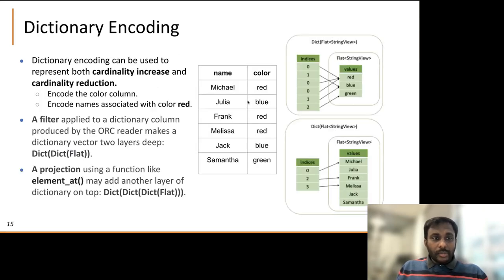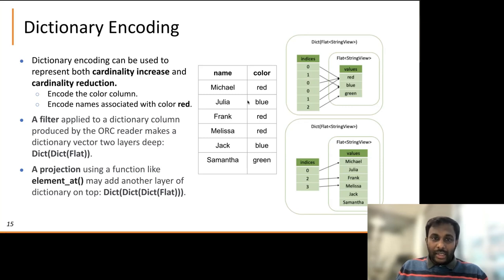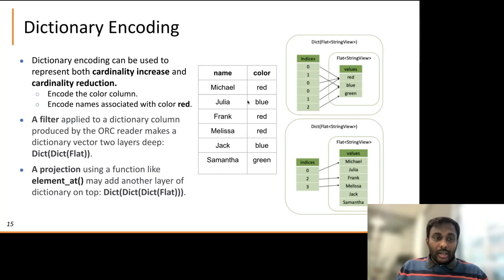Dictionary encoding can be used to represent both cardinality increase and cardinality reduction. Traditionally, dictionary vectors encode large values into a smaller values buffer, but you can also use dictionary encoding to represent names associated with a specific color using indices. Filters applied to a dictionary column produced by the ORC reader add another layer of dictionary encoding. If you apply a projection on top of that filter, it adds yet another dictionary layer. Dictionaries can wrap around other dictionaries wherever possible. The idea is always to avoid materializing and have zero copy. Andy confirmed: the output of a filter is another dictionary — you do the filter on compressed data and spit out more compressed data.